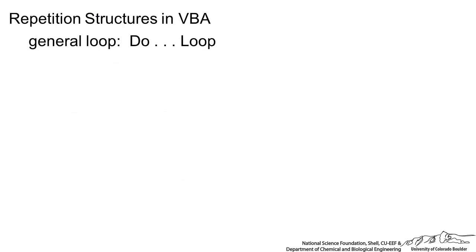Repetition structures in VBA include the general do loop, so that is doing something and looping through until something is met or while something is satisfied. Then we have a count control loop and that is basically you have a fixed number of iterations.